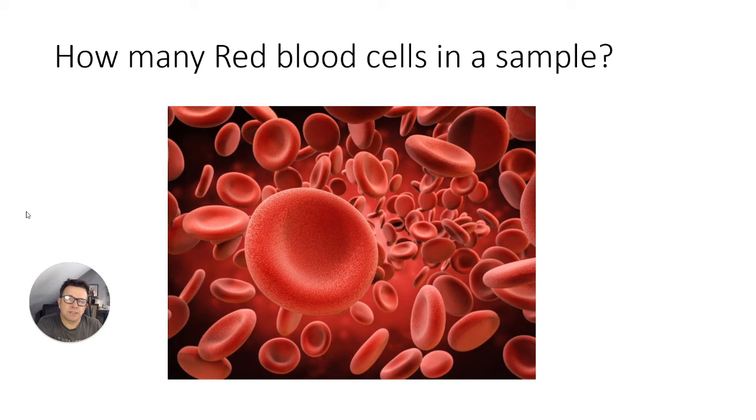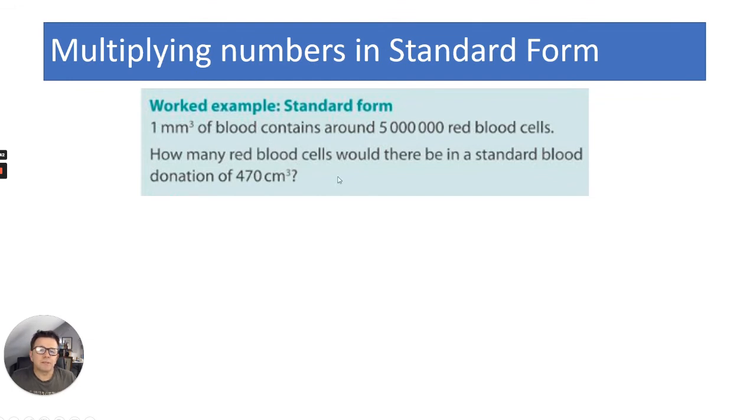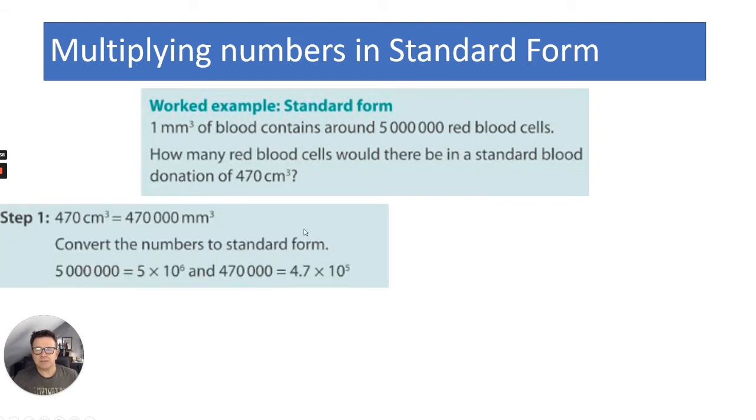In an exam question they might ask you for example how many red blood cells are in a sample. One millimetre cubed of blood contains around 5 million red blood cells. How many red blood cells would there be in a standard blood donation of 470 centimetres cubed? Well that's not millimetres cubed, so you need to first convert it into the same units. 470 times 1000 equals 470,000 millimetres cubed, and then convert them into standard form: 5 million is 5 times 10 to the 6 and 470,000 is 4.7 times 10 to the 5.